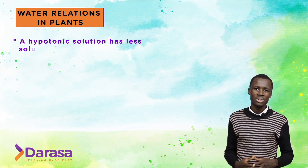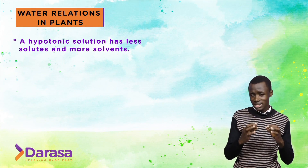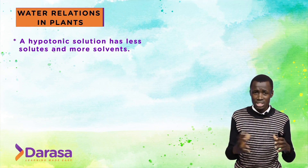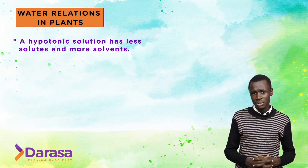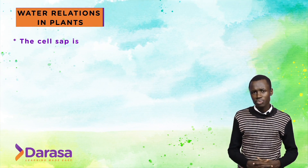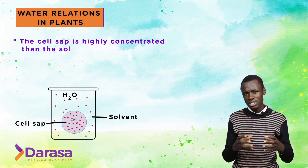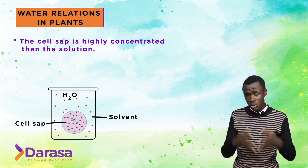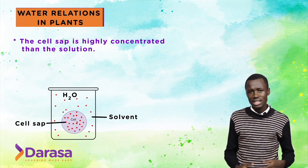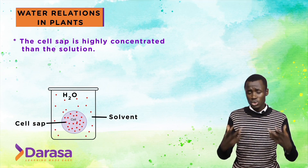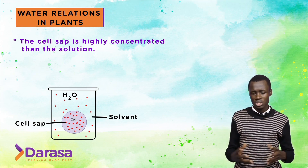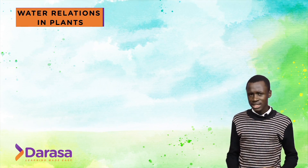A hypotonic solution is a solution that has fewer solutes and more solvents — the solvent concentration is more than the solute concentration. In other words, it is a solution that is lowly concentrated compared to the cell sap. Those are the two definitions of the hypotonic and hypertonic solution respectively.